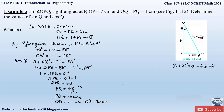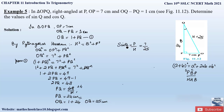Now we can find out the values of sin Q and cos Q. The simplest method to remember the trigonometric ratios is P/H for sine and B/H for cosine. Sin Q equals perpendicular by hypotenuse, where perpendicular is 7 centimeters and hypotenuse is 25 centimeters, so sin Q equals 7/25. For cos Q, the ratio is base by hypotenuse: base is 24 centimeters and hypotenuse is 25, so cos Q equals 24/25.